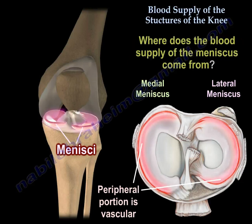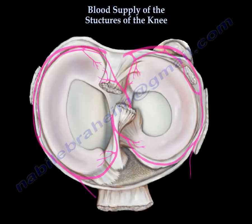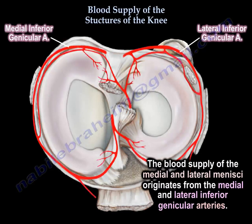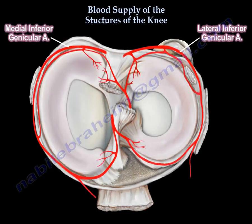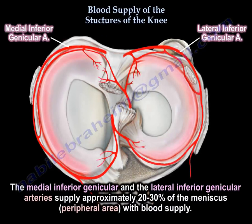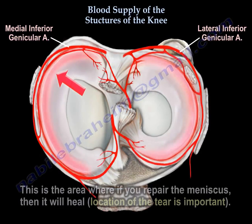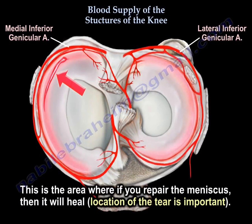The blood supply of the meniscus comes from the medial and lateral inferior genicular arteries, which supply approximately 20 to 30 percent of the periphery or outer part of the meniscus. This is the area — the red zone — where, if you repair the meniscus, it will heal.